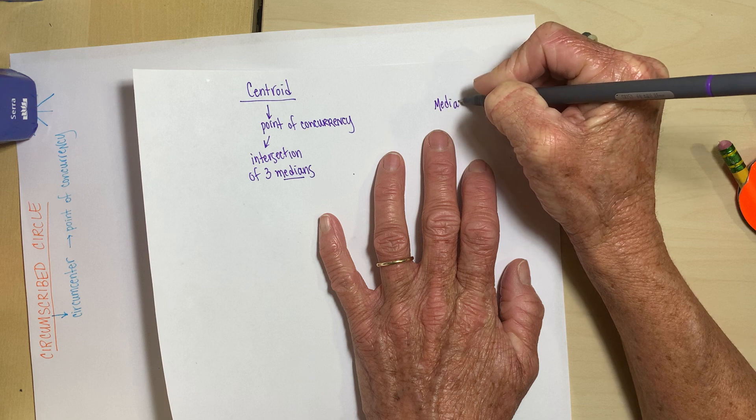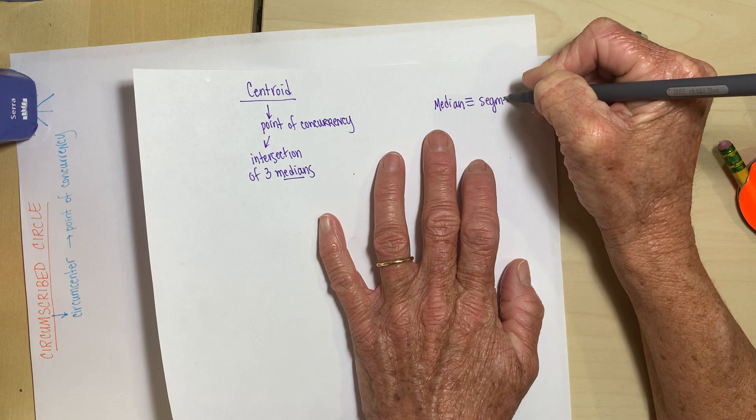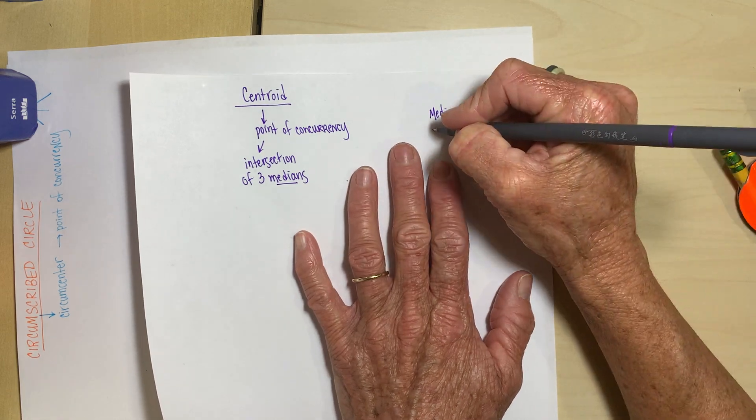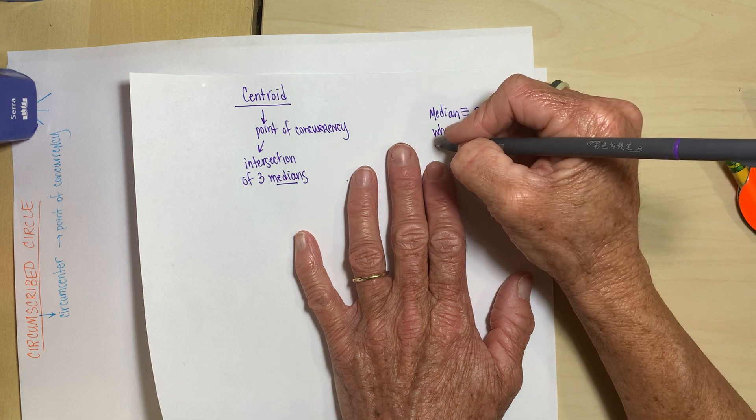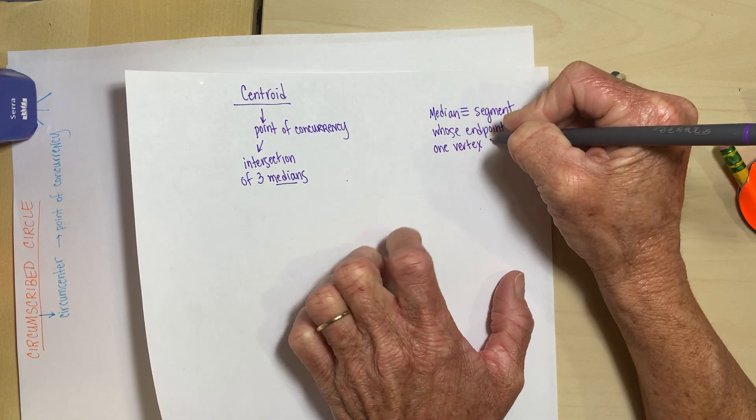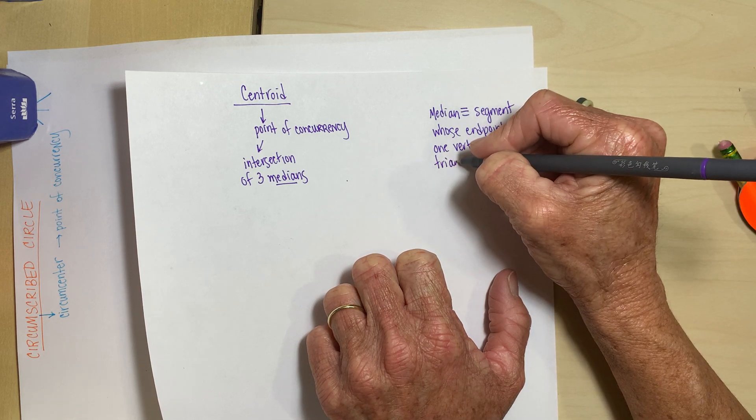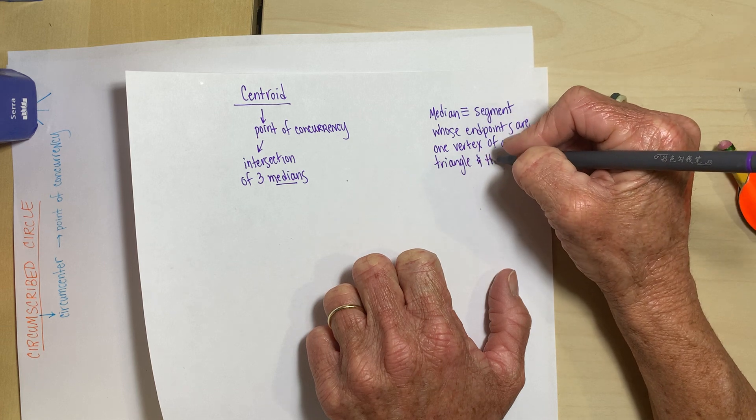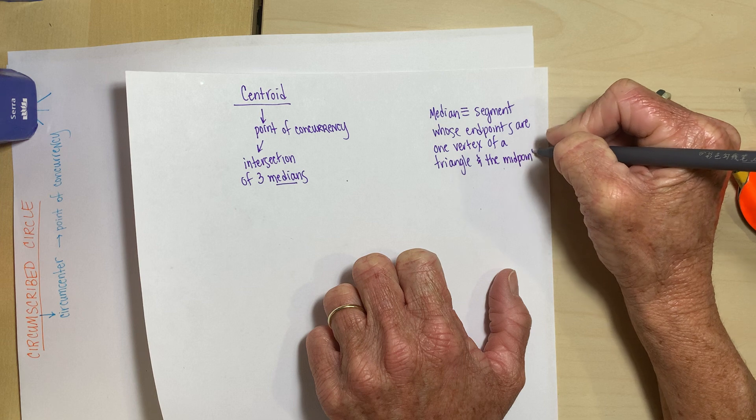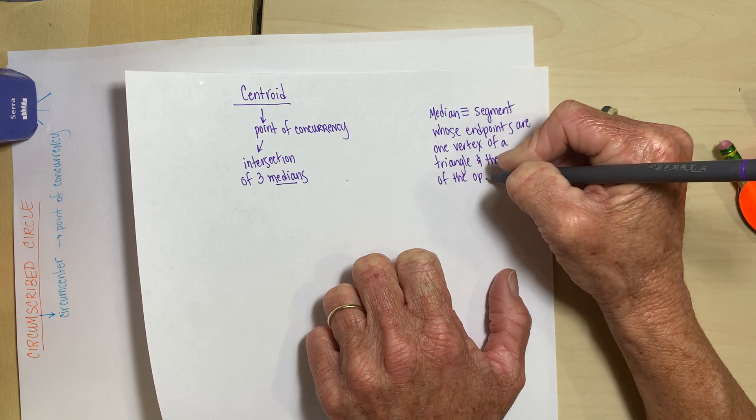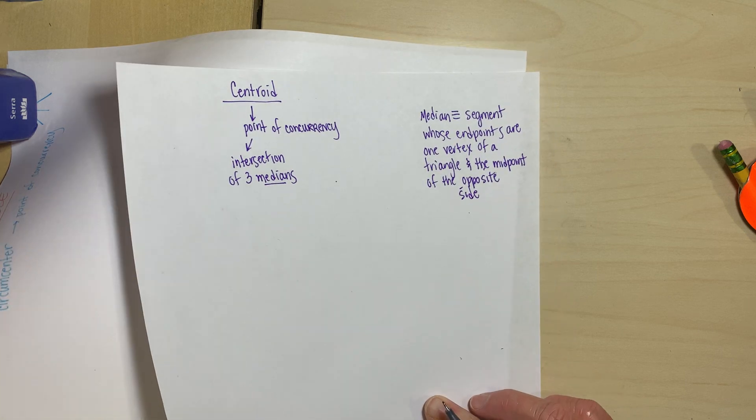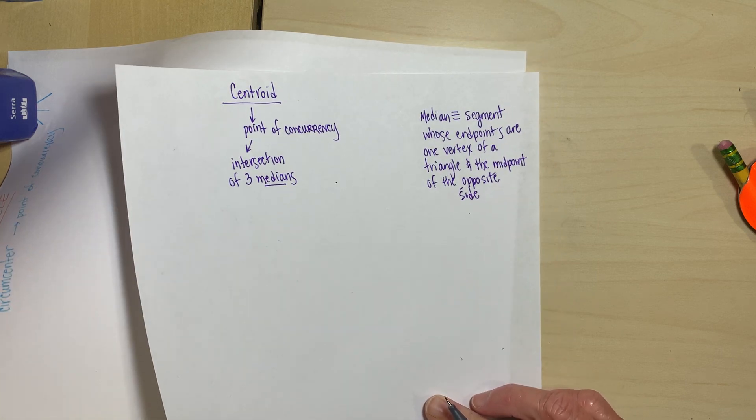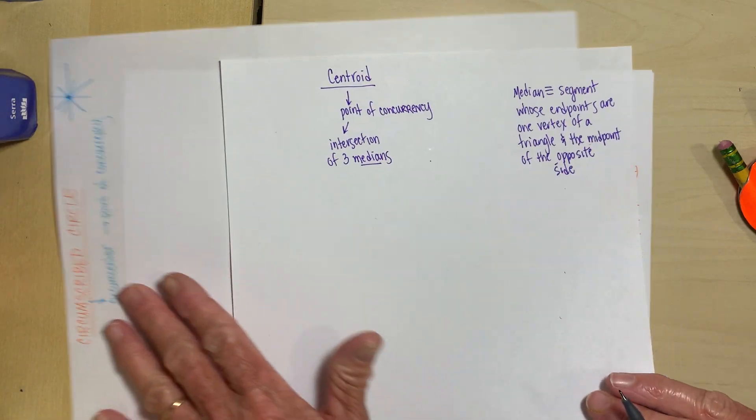It is a segment. It's a special type of segment. It has two endpoints, right? Every segment does. So this segment's endpoints, whose endpoints are one vertex of a triangle and the midpoint of the opposite side. Okay. So if we can find the middle of the side across from the vertex, we'll just connect the vertex to that middle and that's a median. And every triangle has three of them. So the centroid is the intersection of those three medians.